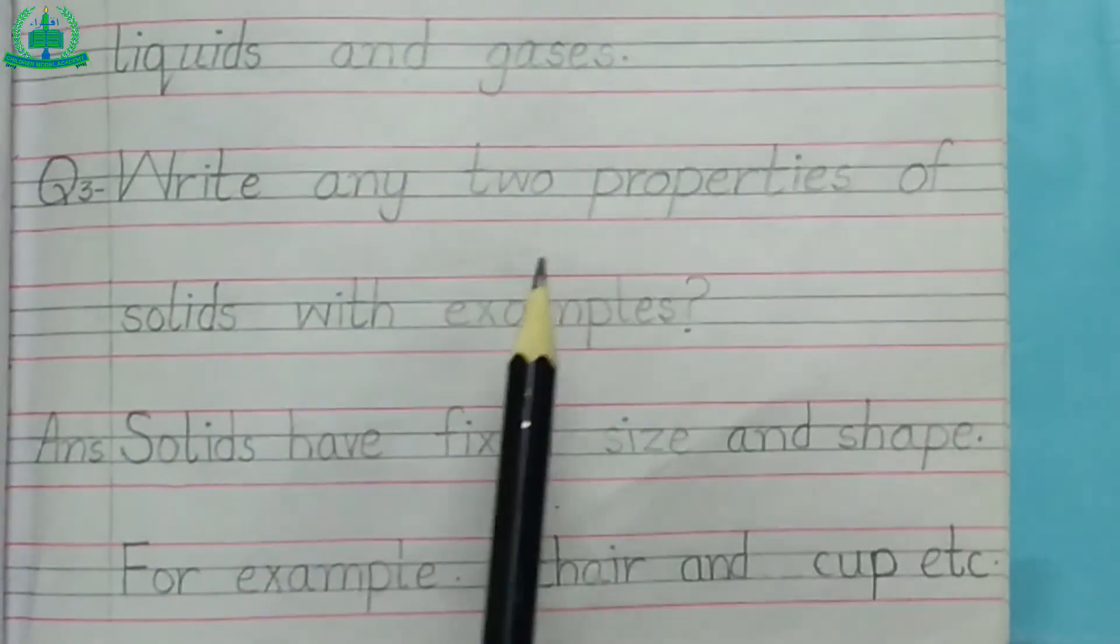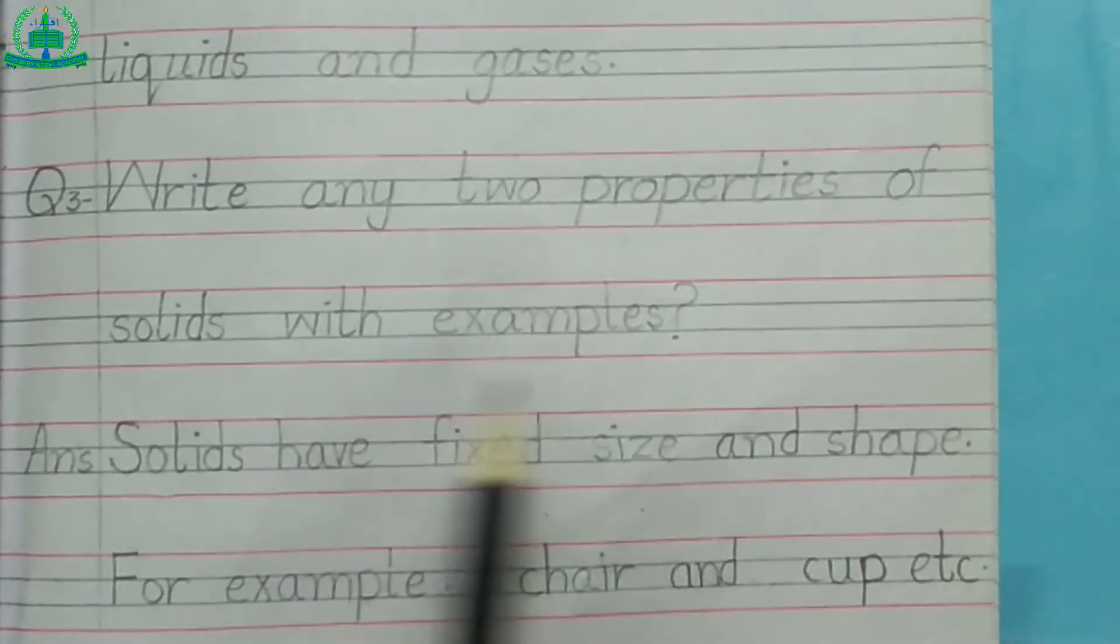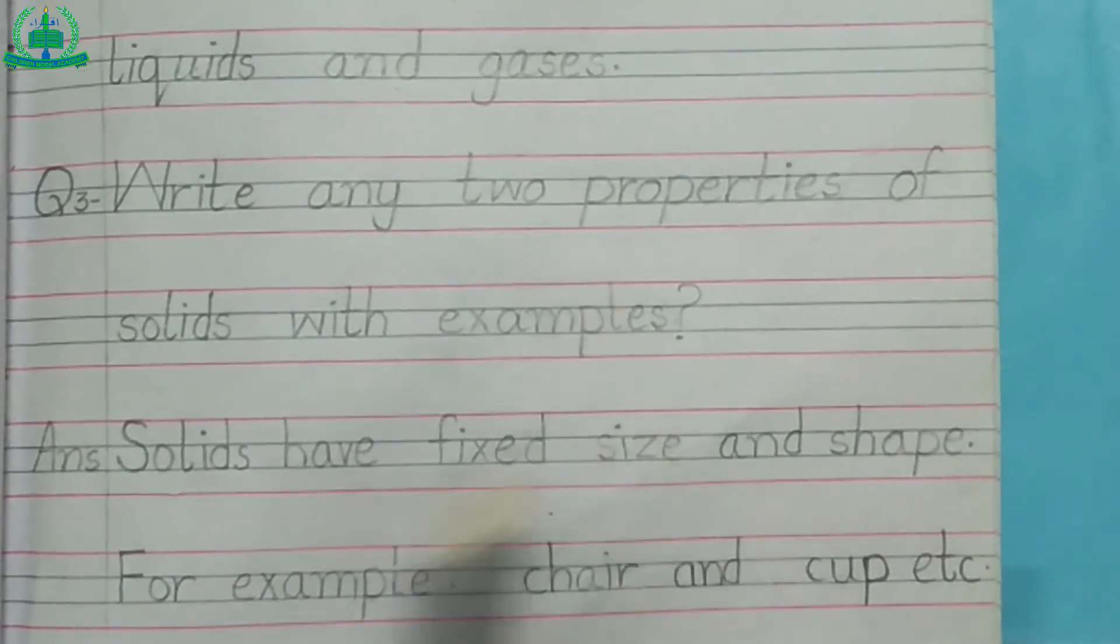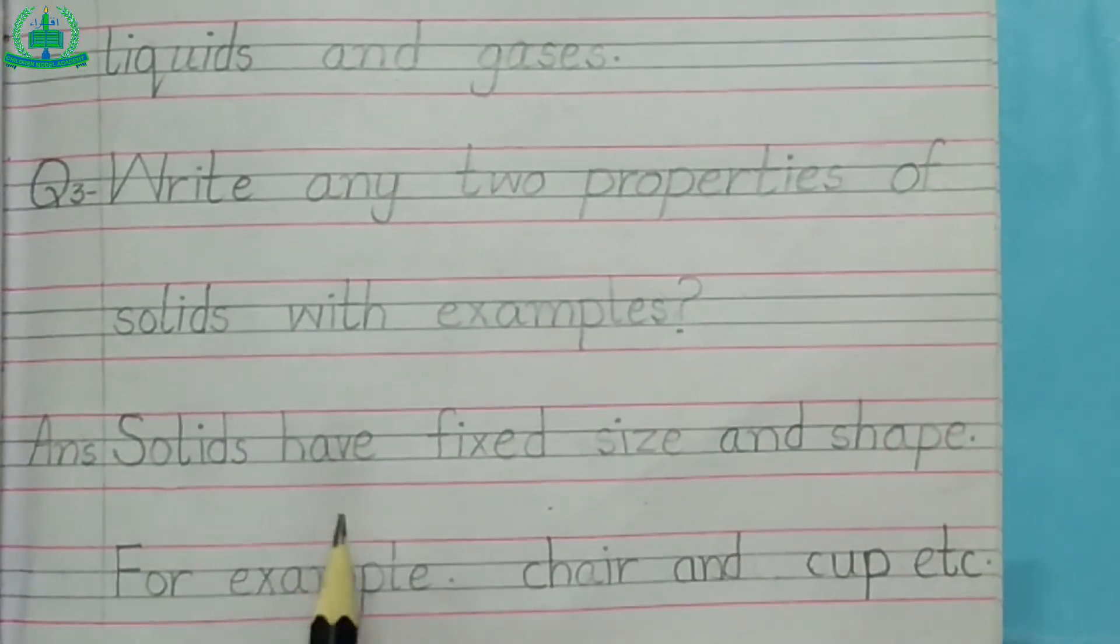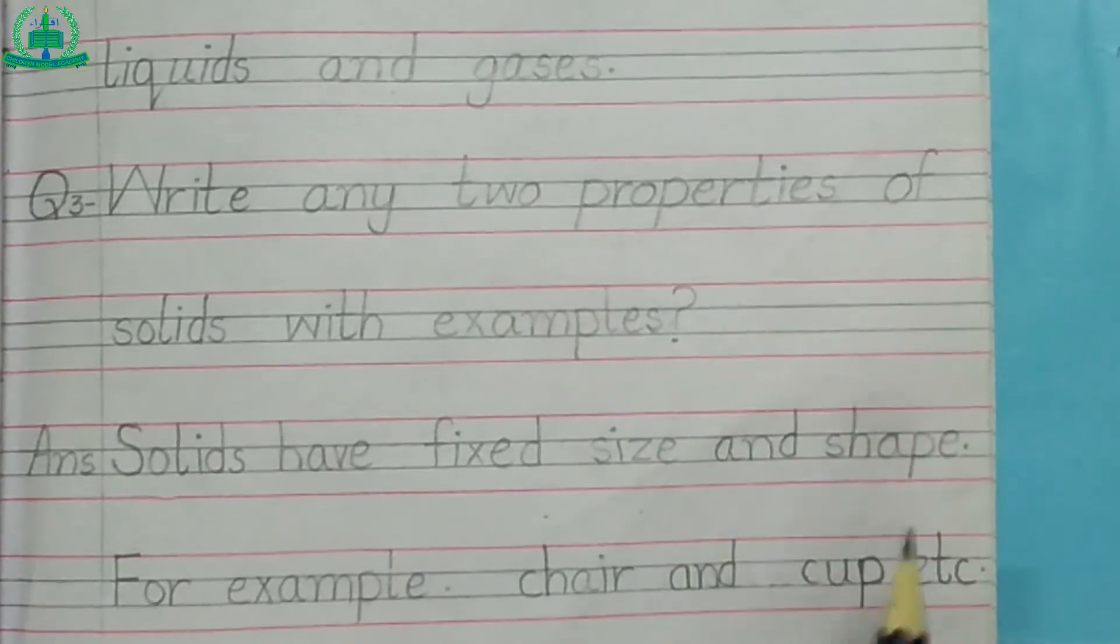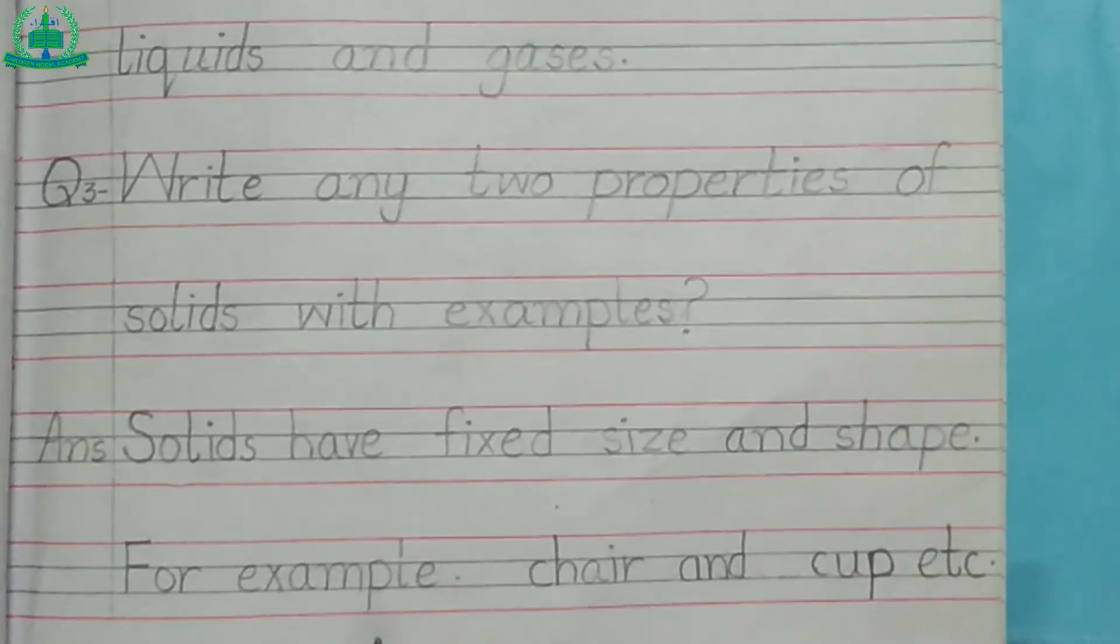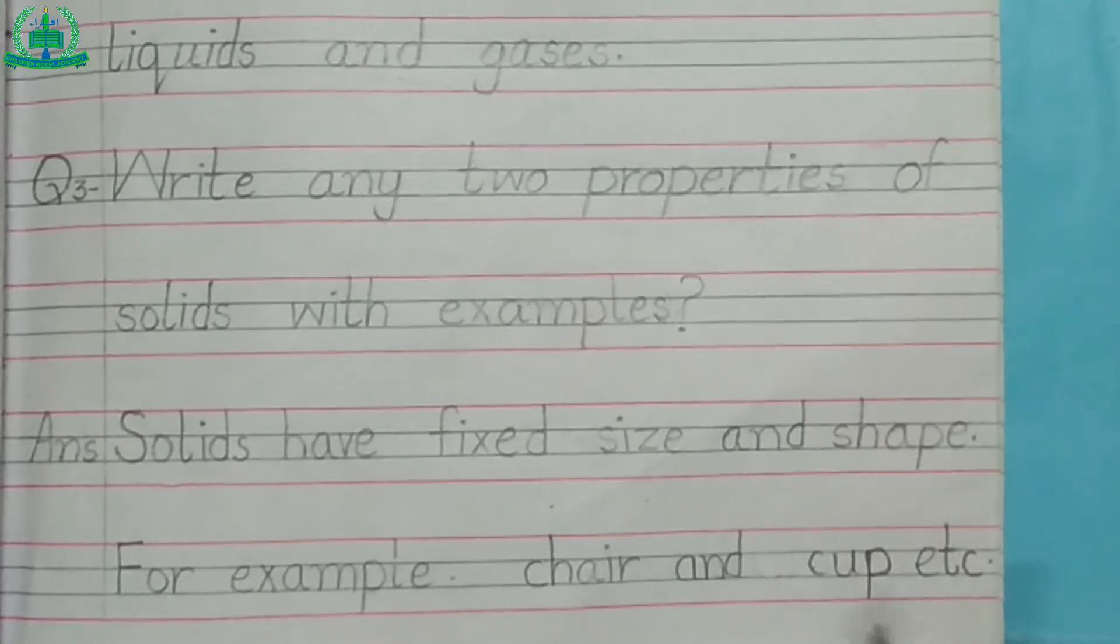Question number 3: Write any two properties of solids? Answer. Solids have fixed size and shape. For example, chair and cup etc.